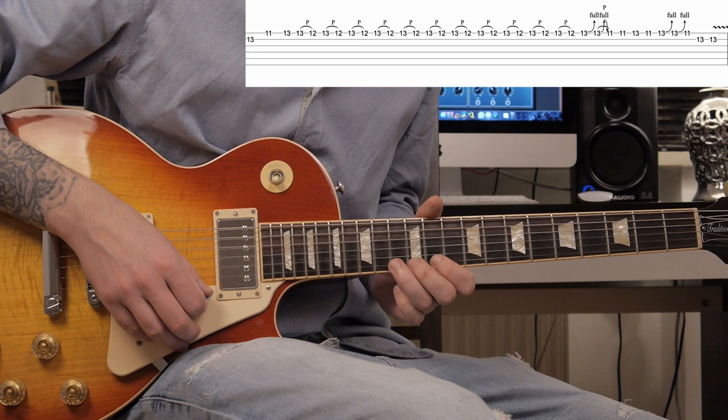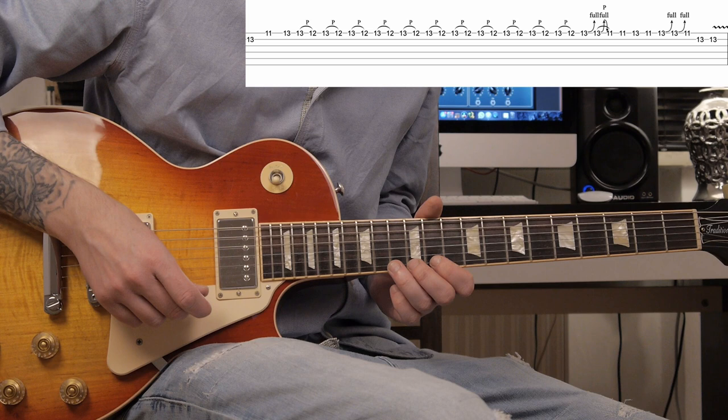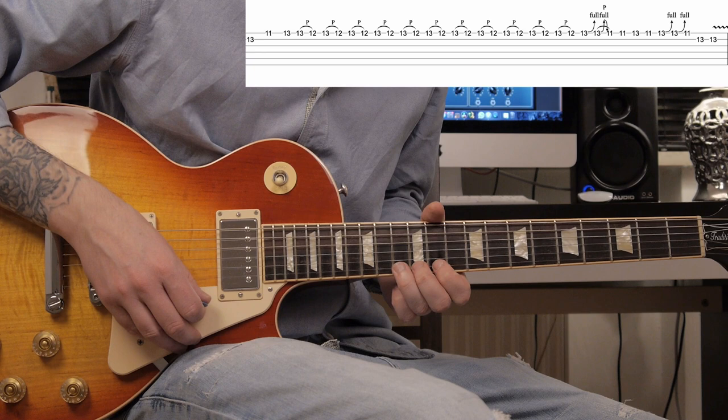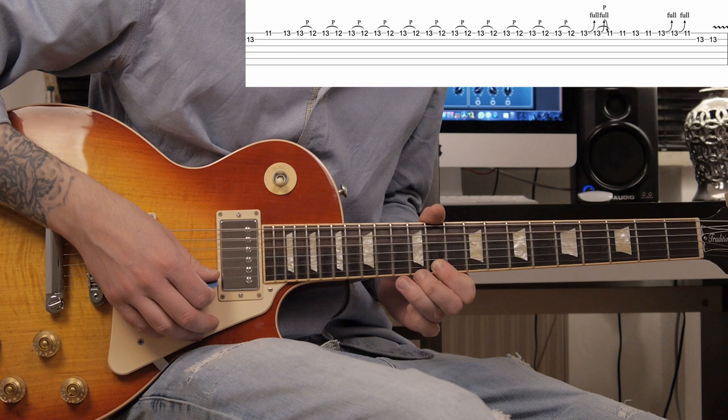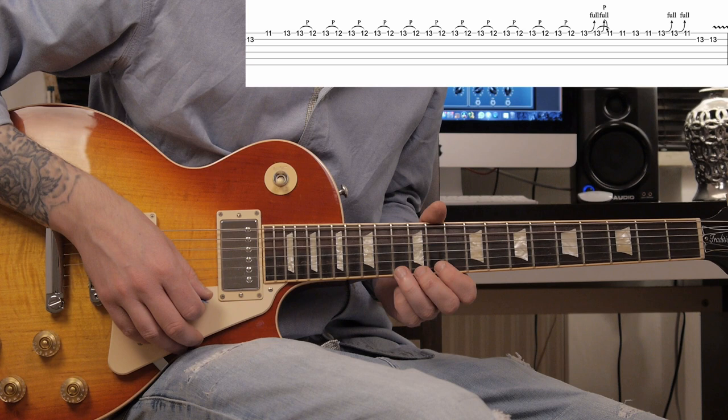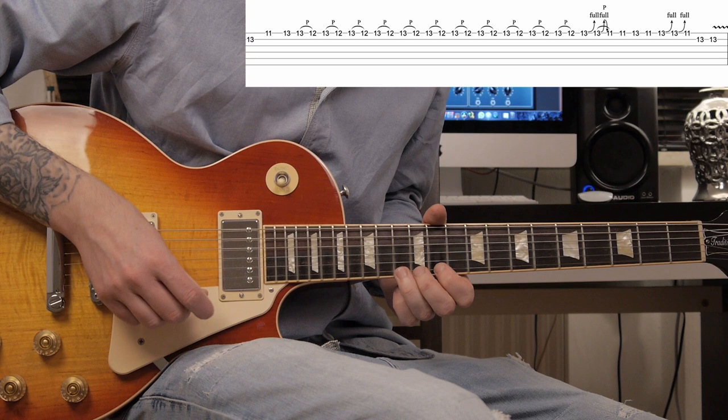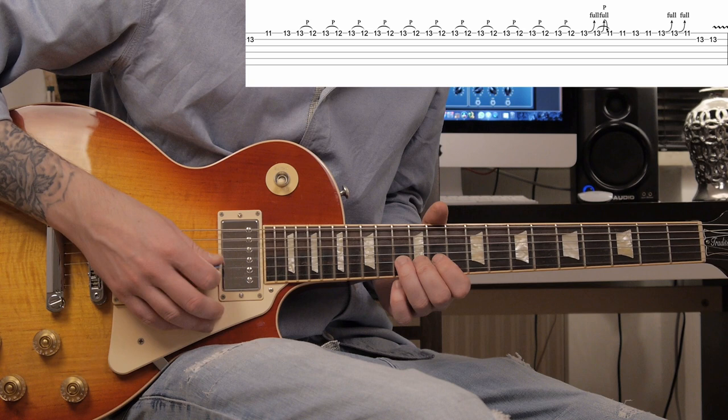And then he plays a full tone bend on fret 13 on the high E string twice. Release, pull-off to 11. 11, 13, 11. Full tone bend on fret 13 again, two times. Back to fret 11 on the high E string. And fret 13 on the B string twice with a little vibrato.